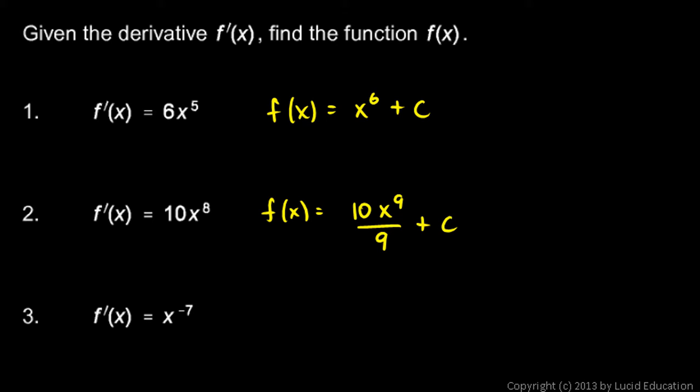x to the negative 7, that's a negative sign right there. f-primed is x to the negative 7, so f of x is going to be x to the negative 6 over negative 6 plus c. And if you wanted to, you could write that as negative 1 over 6x to the 6th, plus c. Either of those, either way to write it would be okay.